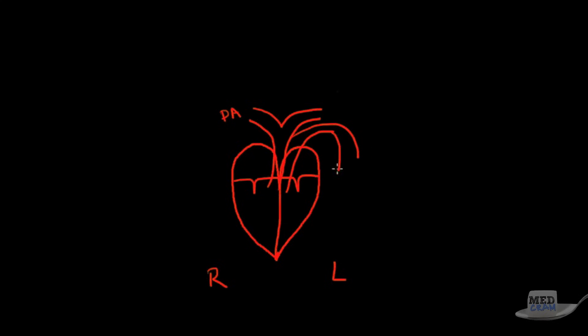The first thing to remember when we talk about ventilation perfusion is the heart. Here's my little diagram of the heart - there's the right side of the heart and the left side of the heart. Here we have the tricuspid and mitral valves. The right side pumps to both the right and the left lungs through the pulmonary artery and the left side pumps blood out through the aorta.